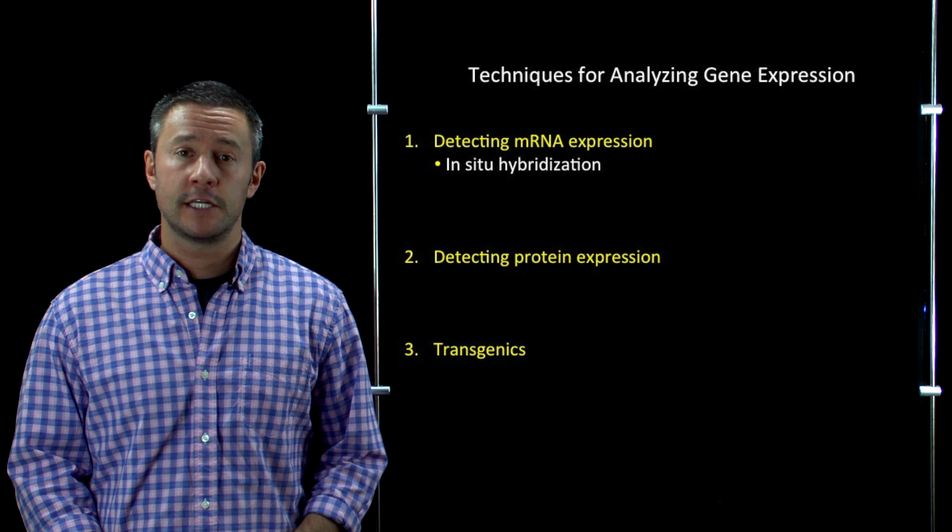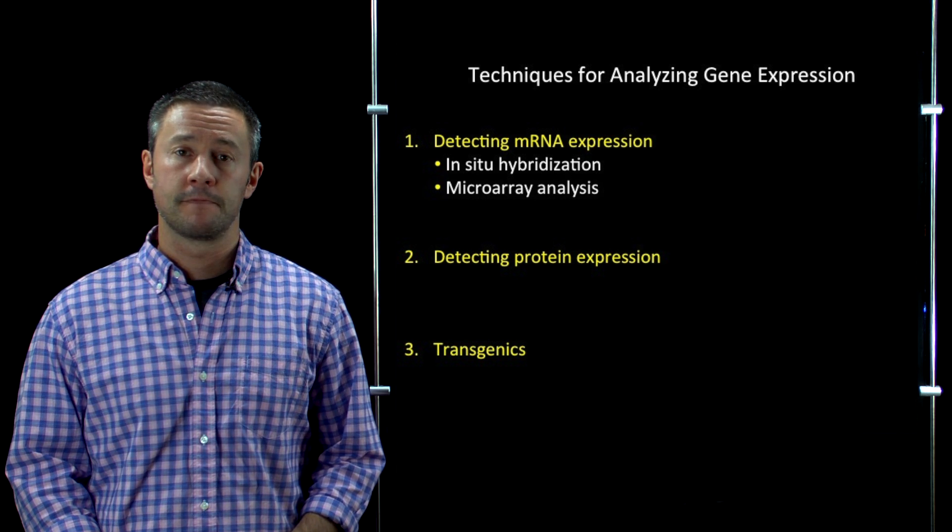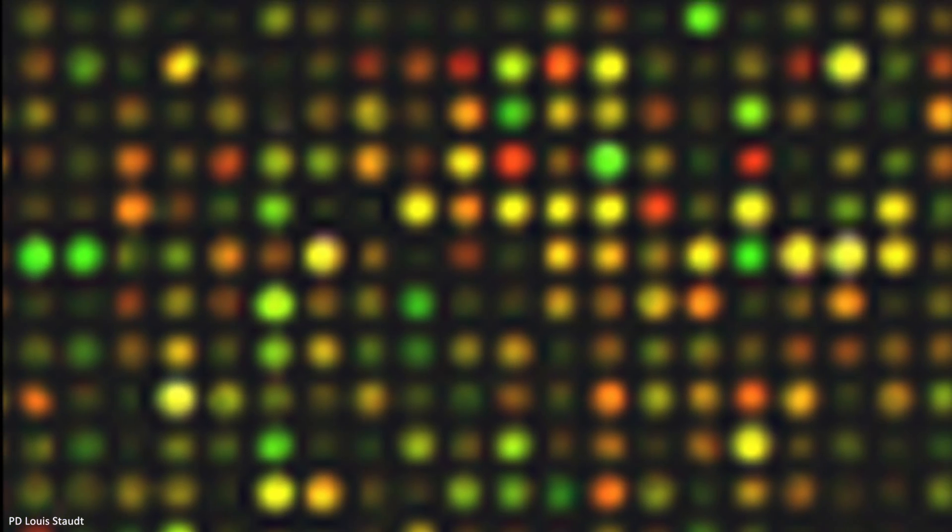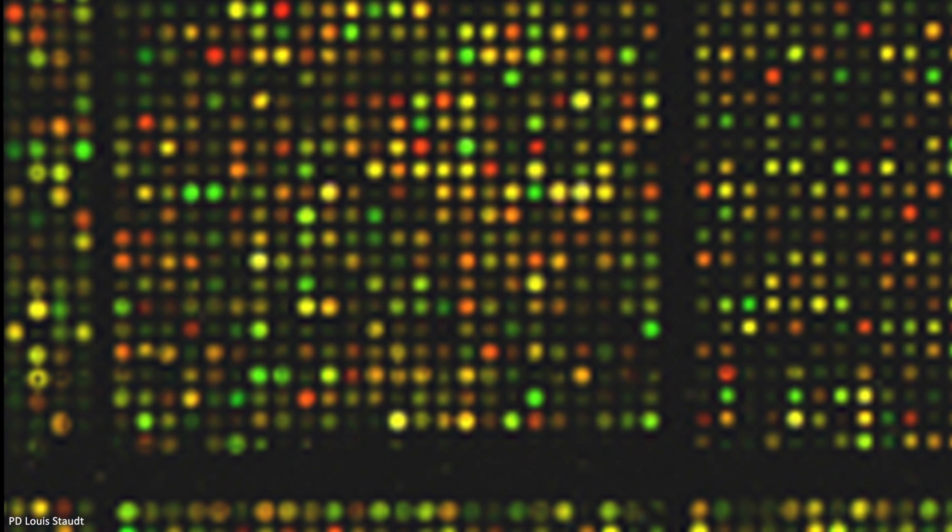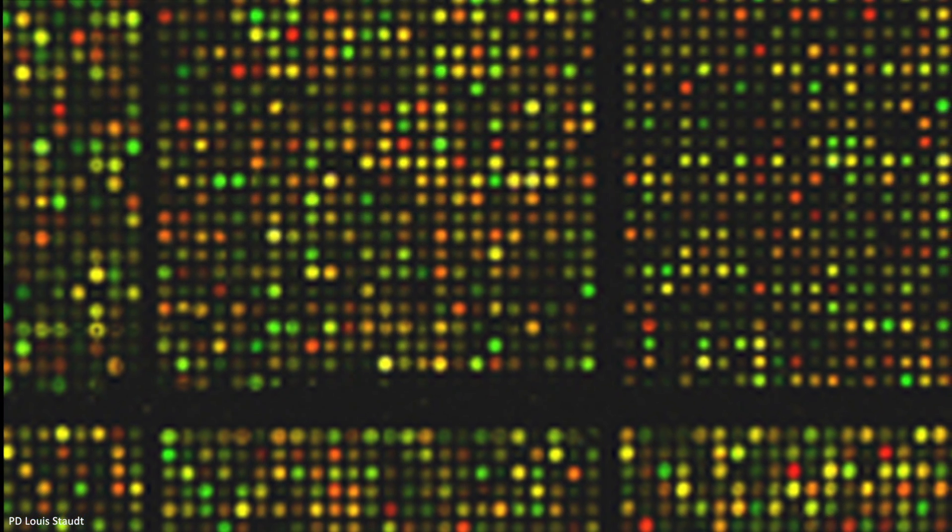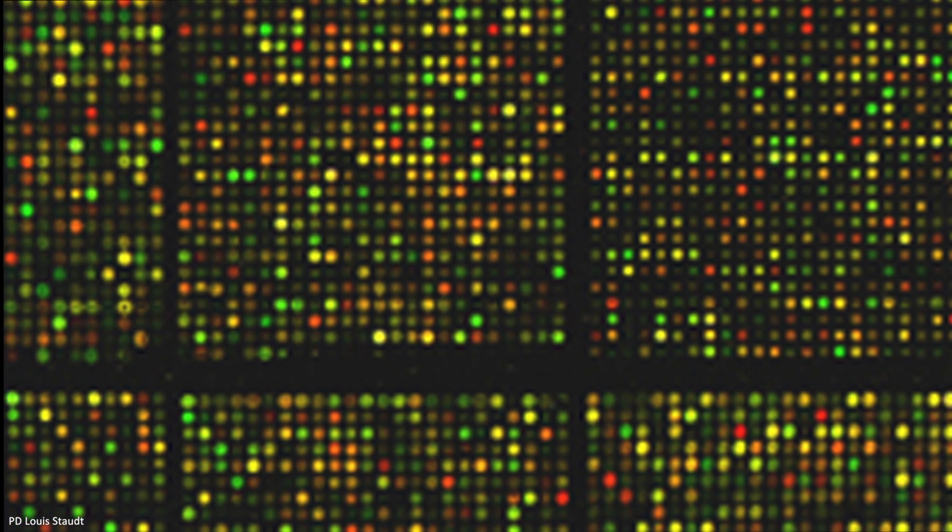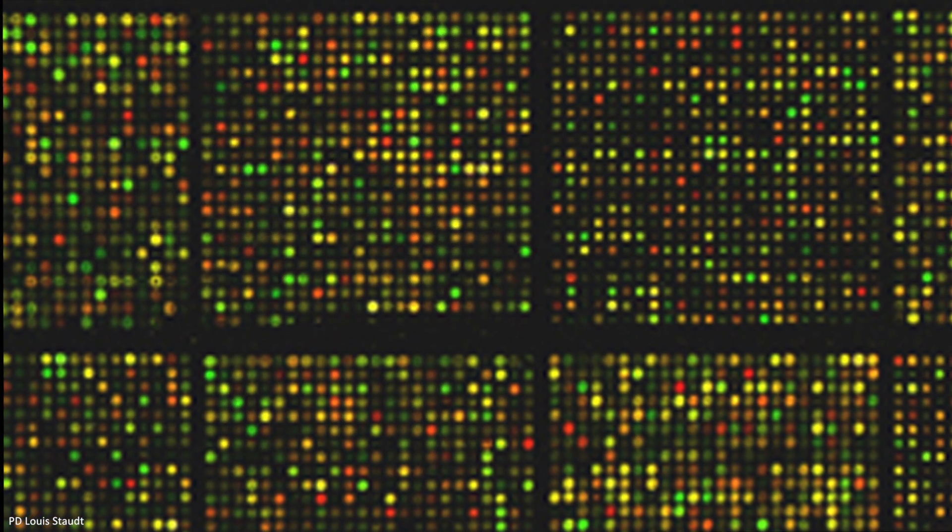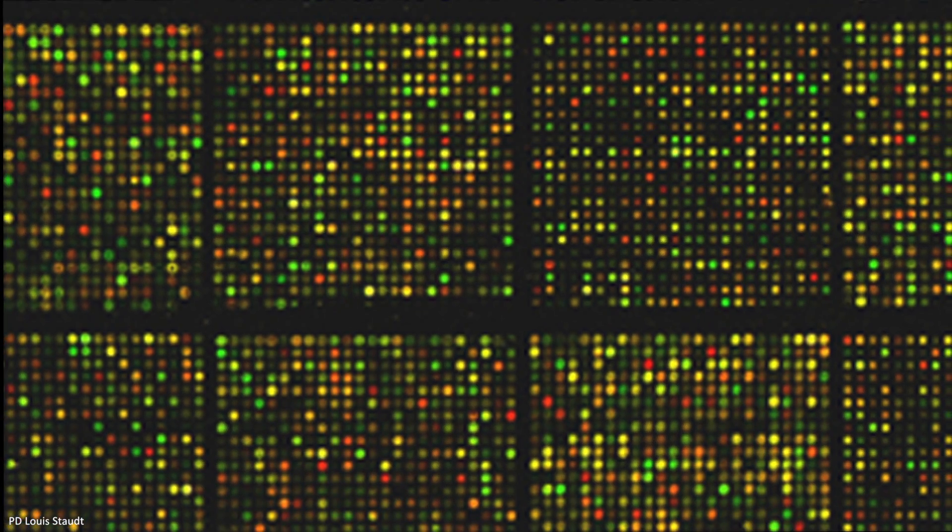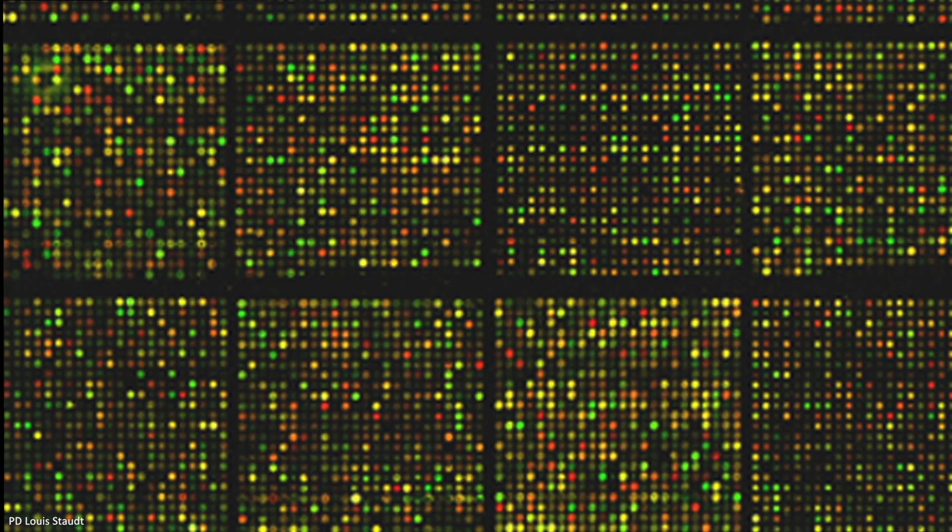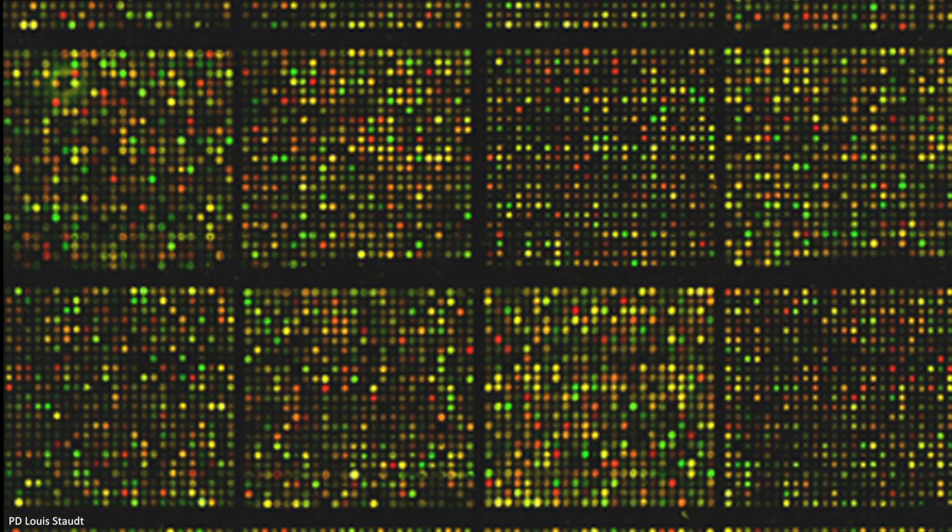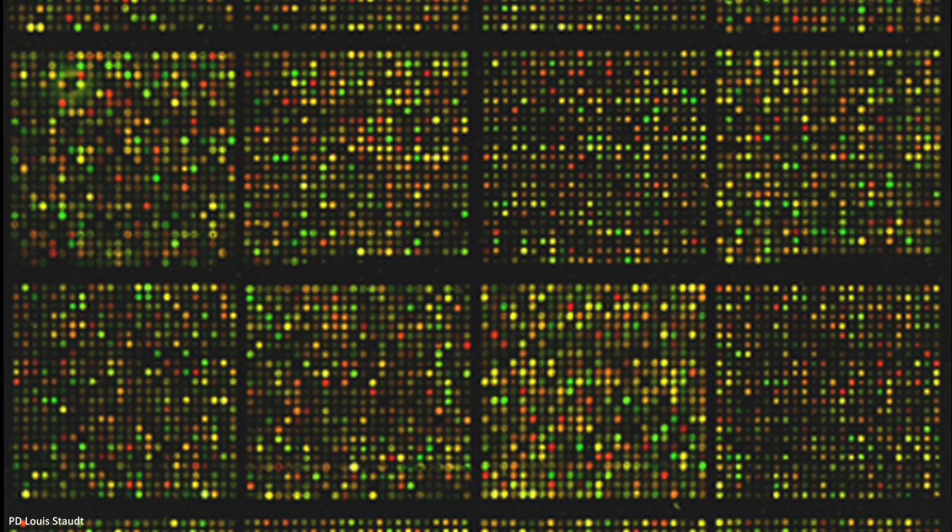The first of those techniques is called microarray analysis. So microarrays are glass slides that are printed with DNA spots. And the principle of complementary base pairing can be exploited to allow you to hybridize fluorescently labeled nucleic acids in order to detect the levels of mRNA for the gene that's printed in that spot. If that sounds a little bit confusing, don't worry because we'll go into more detail in another video. For now, just realize that this is a really important approach for determining gene expression levels on a genome-wide basis.